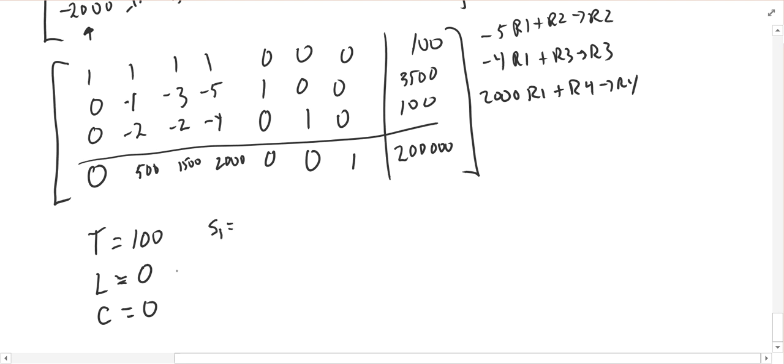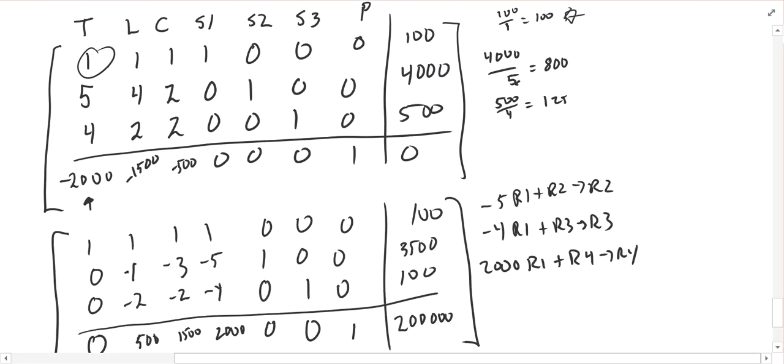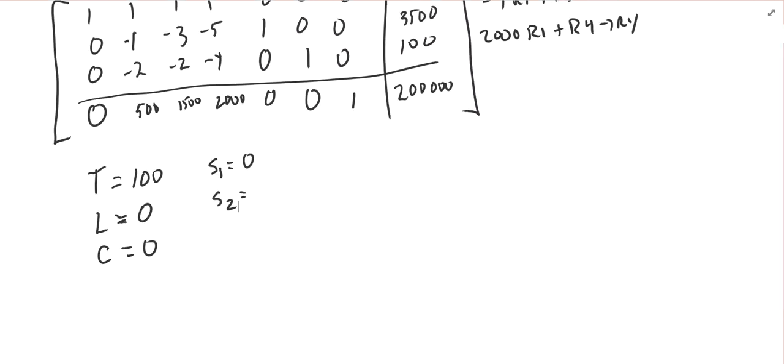S1 is my acreage slack variable. That's all messy, so it's going to be 0. S2, I put that into the second equation. That was the amount of fertilizer money I had for fertilizer. And S2, it looks like, is $3,500. I have $3,500 that I'm not going to spend on fertilizer. S3 was the labor hours. And that has a value of 100. So I have 100 extra labor hours that I don't need per week. And then finally, my P value would be $200,000.